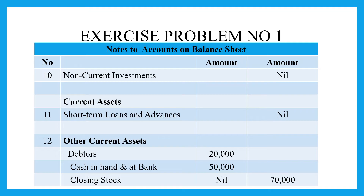Non-current investments and other current assets. Short-term loans and advances, and other current assets. Debtors are ₹20,000. Cash in hand and bank is ₹50,000. Closing stock — so the end total for current assets is ₹70,000.